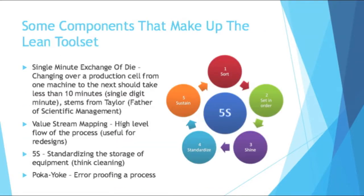So how does one go about eliminating waste? The lean manufacturing method has tons of different tools you can use, and each tool could be its own video and course of study. Here are some examples. You have single minute exchange of die, which is really focused on changing over a production cell from one machine setup to the next in less than 10 minutes — it's not a single minute, it's a single digit minute, so nine minutes or less. This way of thinking really stems from Frederick Taylor, the father of scientific management. If you can standardize your dies, it makes it a lot easier for maintenance to swap them out.